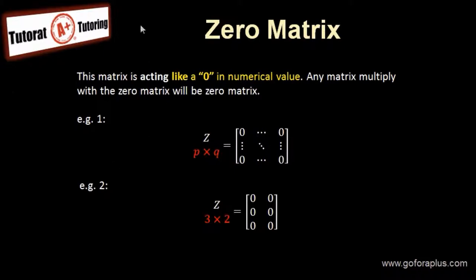So what is a zero matrix? A zero matrix acts like a 0 in numerical value — any matrix multiplied with the zero matrix will be a zero matrix. It doesn't have to be a square matrix. In this example, it's P by Q, so you have P rows and Q columns. Another example: matrix C is 3 by 2, so 3 rows and 2 columns. As long as all the elements inside the matrix are all 0, this is a zero matrix.